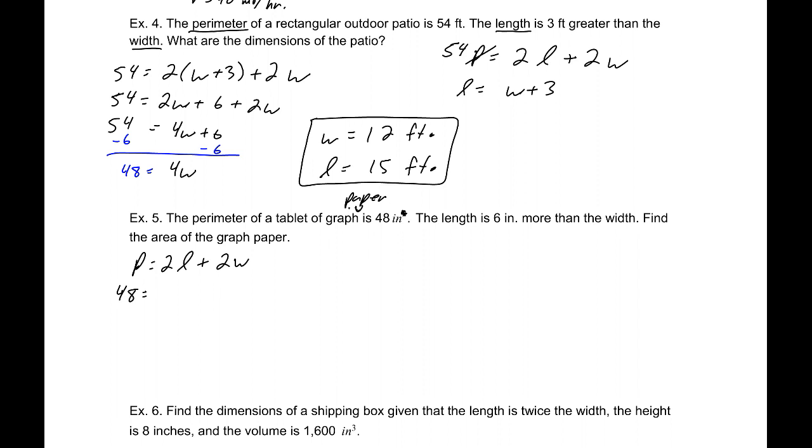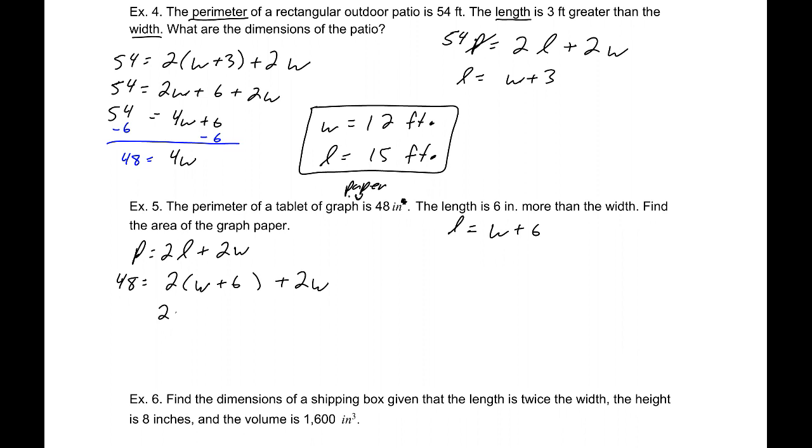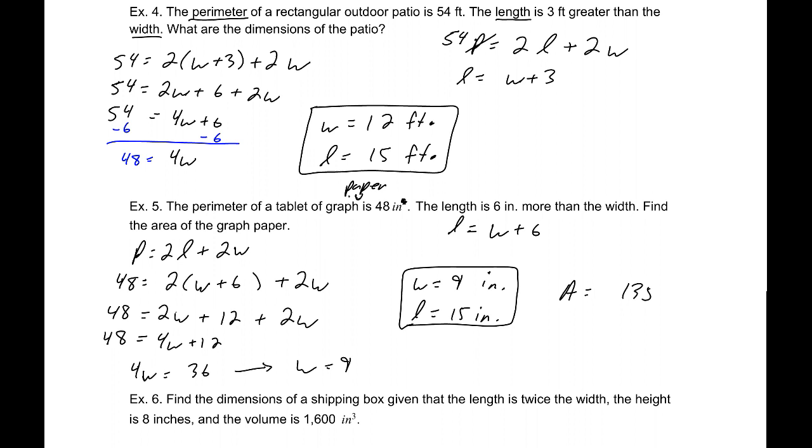That will be 2 times our length. The length is 6 inches more than the width, so this is W plus 6, plus 2W. Distributing, 2W plus 12 plus 2W equals 48. Which gives us 4W plus 12 equals 48. Subtracting 12, 4W equals 36, and W equals 9. So our width is 9 inches, which makes our length 15 inches. Which means our area is 9 times 15, or 135 inches squared.